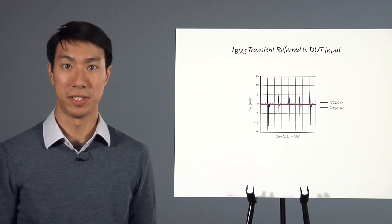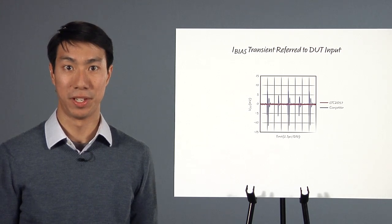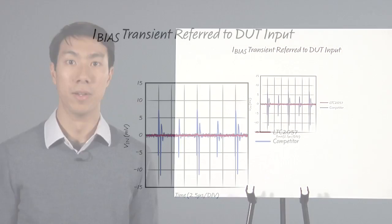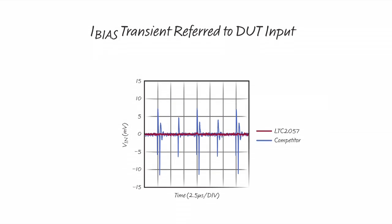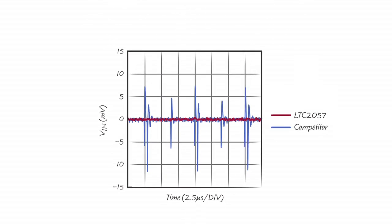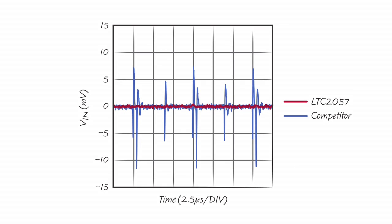To provide a better sense of scale, this plot shows the clock feed-through transients referred to the input. For larger source impedances, the 2057's clock feed-through may introduce significant error, but at this level filtering the output will be sufficient.